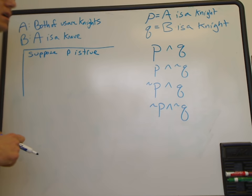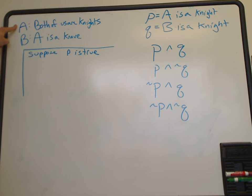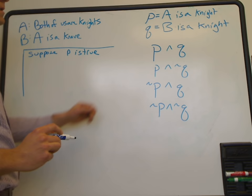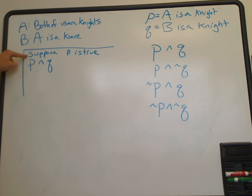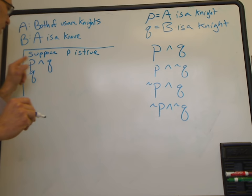We've defined P, so what I'm saying here is: suppose A is a Knight. If A is a Knight, then what A said must be true. What A said is 'both of us are Knights,' which translates to P and Q being true. So our first statement is P is true; our second statement is P and Q are true. Therefore Q must be true — meaning B must be a Knight.